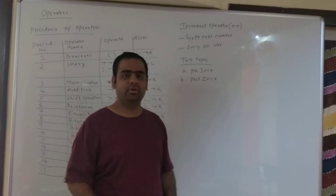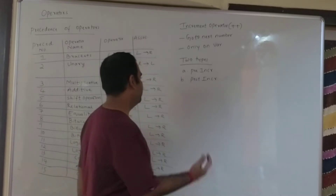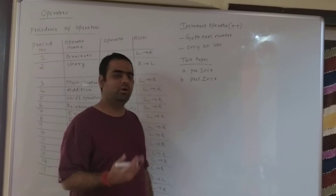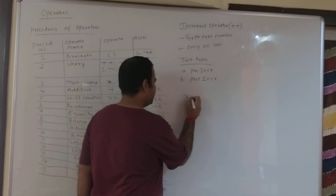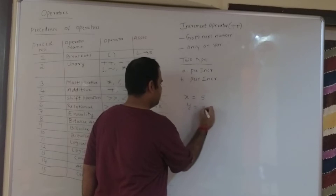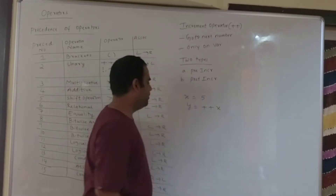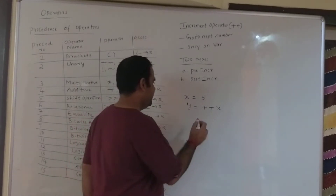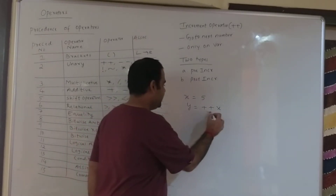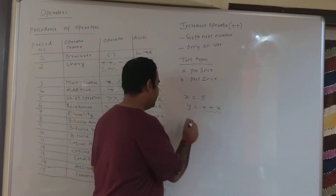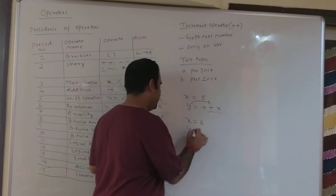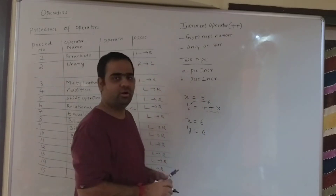There are two types of increment operators. The first one is pre-increment and the second one is post-increment. Pre-increment means the operator plus plus is before the operand. For example, x is equal to 5 and y is equal to plus plus x. Here plus plus appears before the operand x, therefore it is pre-increment. First, the incrementation takes place, so the value of x becomes 6, and this 6 is copied to y, so the value of y also becomes 6.